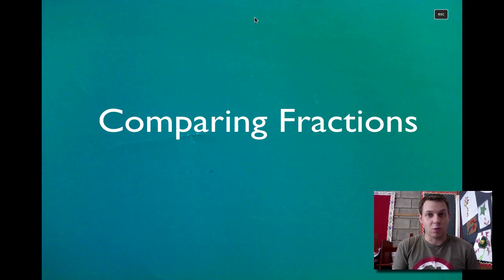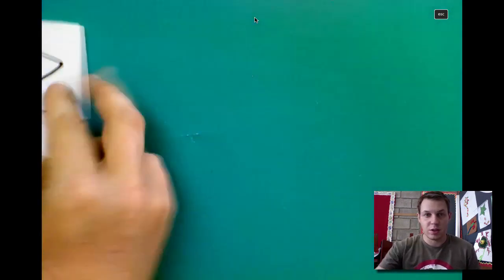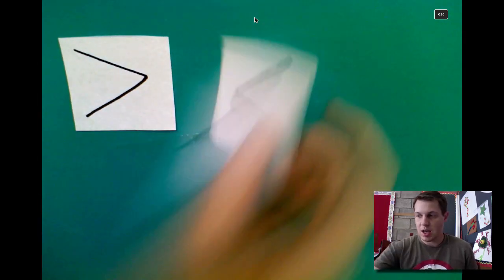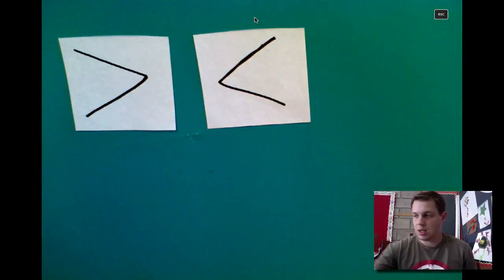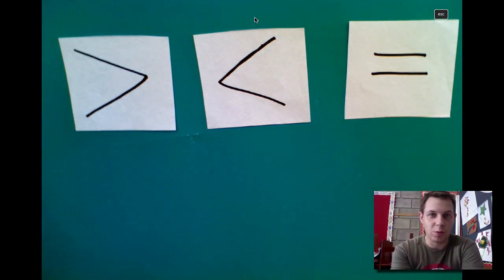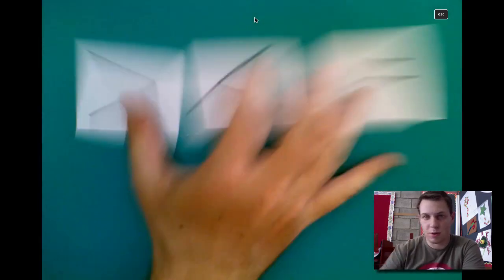Today, we're going to learn how to compare fractions. When we compare fractions, we have to use a couple different symbols: greater than, less than, and equal to. You've probably already used these before with comparing whole numbers, but today we're going to use them with fractions.